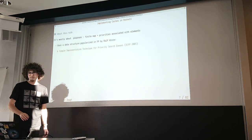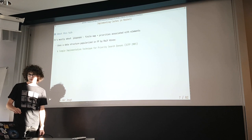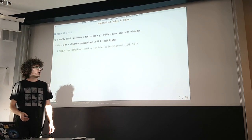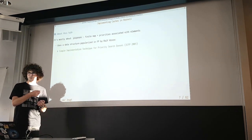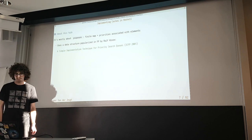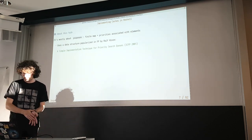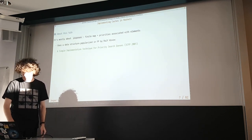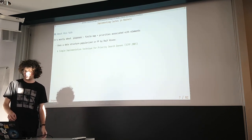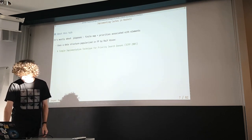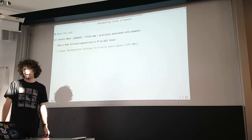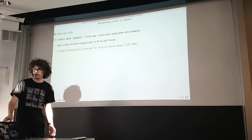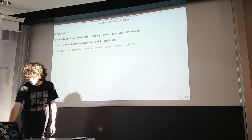So let's talk about PSQs. The data structure in PSQs is really just a finite map — a dictionary — with some sort of priority associated with every element. There are two main implementations in this library. One uses a simple implementation for priority search queues submitted around 20 years ago for ICFP, using tournament trees, which we'll talk about. I think tournament trees are really cool and you probably haven't seen them before.